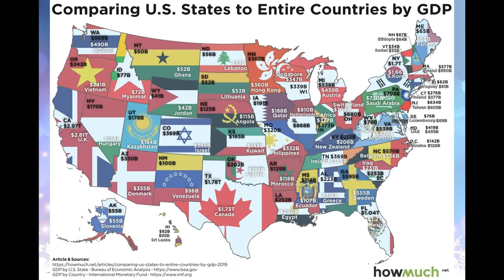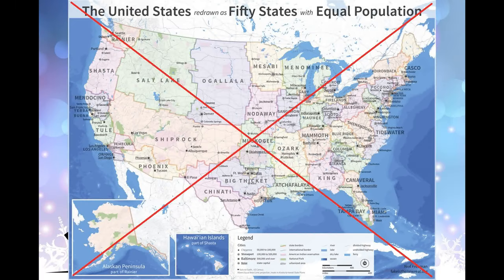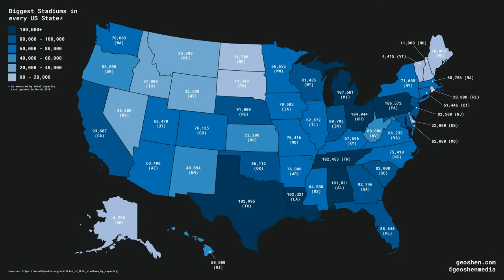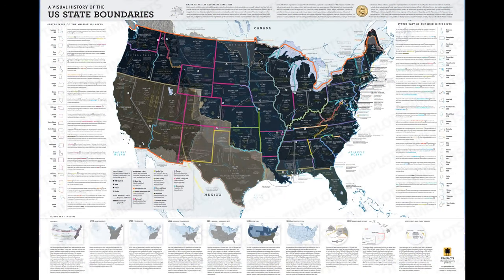Historically, the tasks of local law enforcement, public education, public health, regulating interstate commerce, and local transportation and infrastructure have generally been considered primarily state responsibilities, although all of these now have significant federal funding and regulation as well. Over time, the Constitution has been amended, and the interpretation and application of its provisions have changed. The general tendency has been towards centralization and incorporation, with the federal government playing a much larger role than it once did.